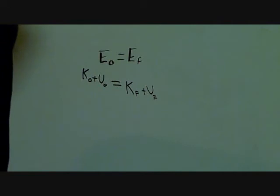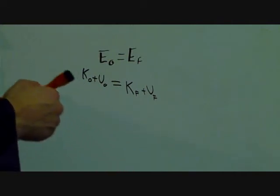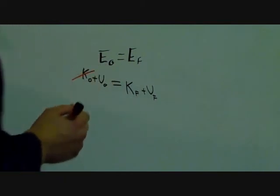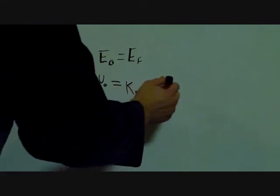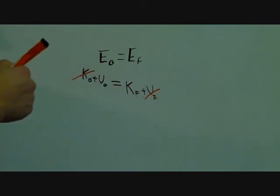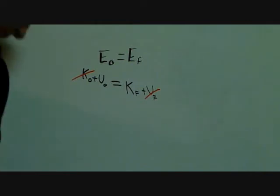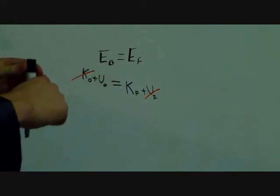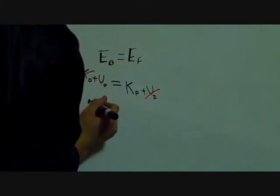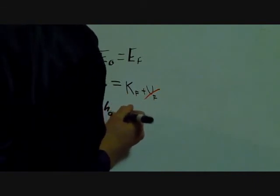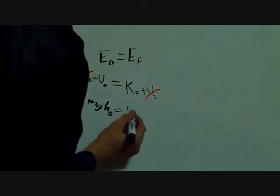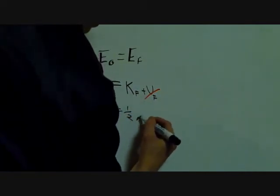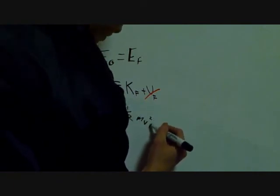we know that at the beginning, the person is not moving. Therefore, it has no kinetic energy. And at the end, the person's height is 0. Therefore, their gravitational potential energy will be 0 as well. We can cross those two off. So, gravitational potential energy is MGH initial, which will be equal to kinetic energy final, which will be 1 half Mv squared final.